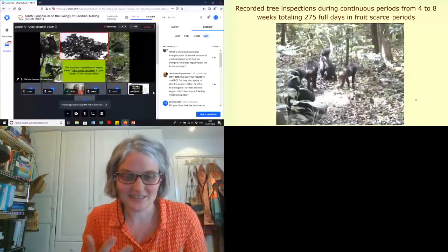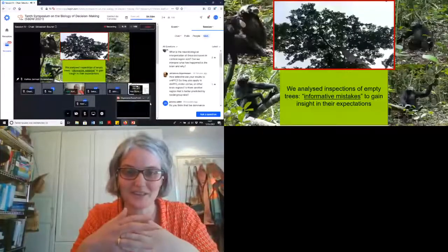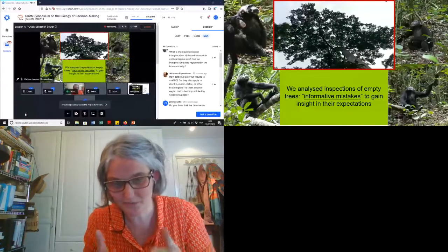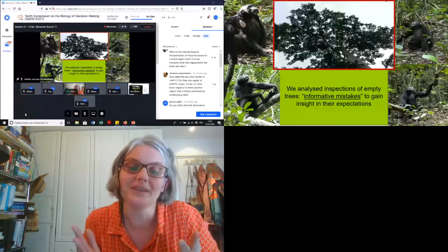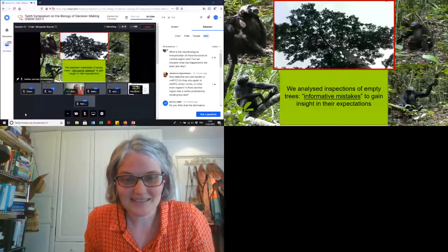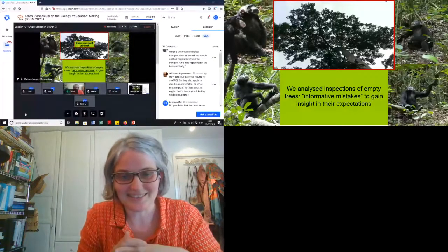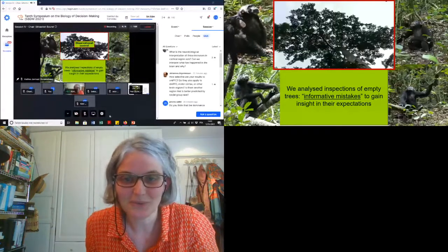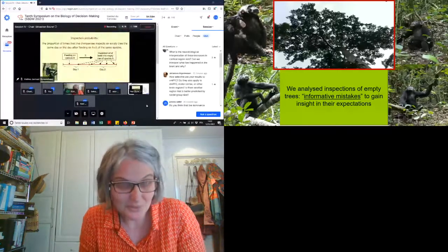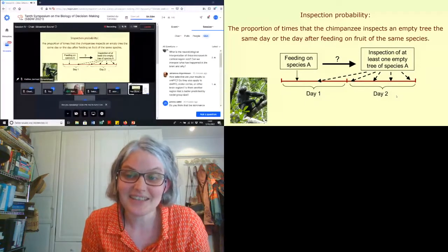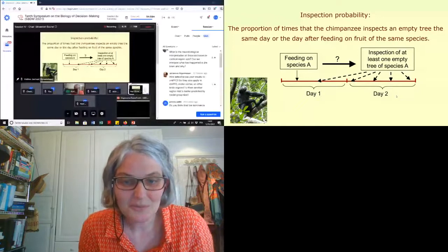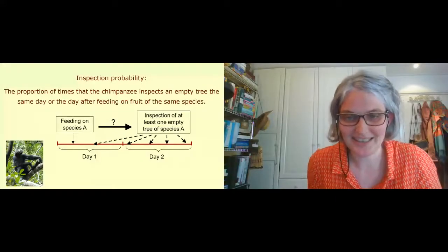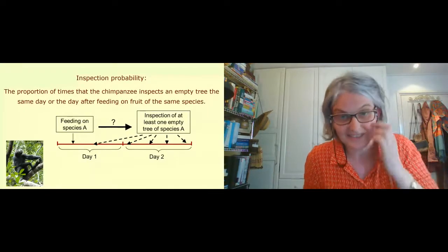We were specifically interested in inspections of empty trees — trees that did not bear any fruit and could not cue the chimpanzees to look up. By recording when chimpanzees would stop traveling, look in a direction or at the ground, and fail to find fruits, we gained insight into their expectations. Observing this behavior in this specific context allowed us to exclude the possibility that they used sensory cues. We recorded inspection probability: the proportion of time chimpanzees inspected an empty tree the same day or day after feeding on fruit of that same species.